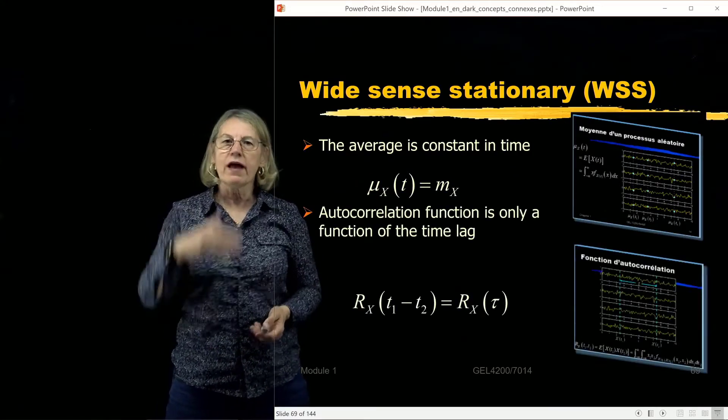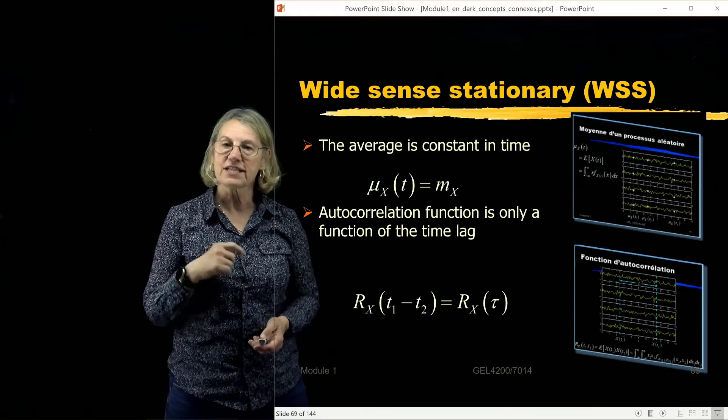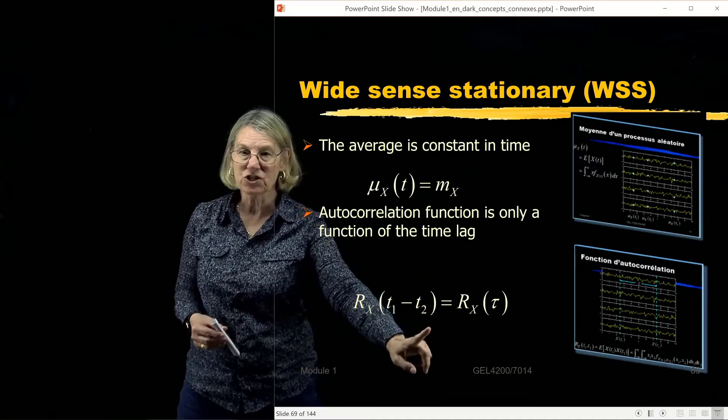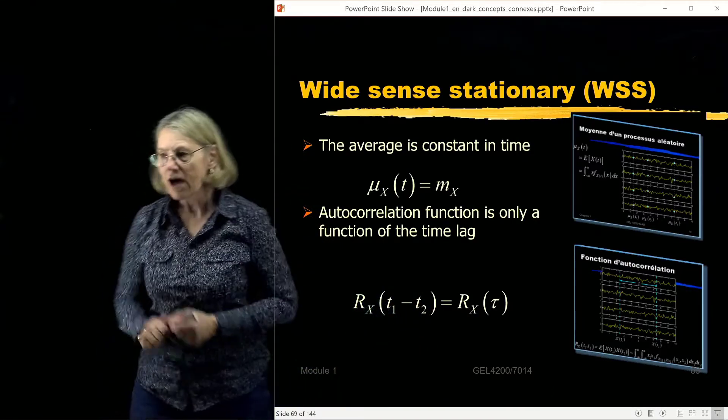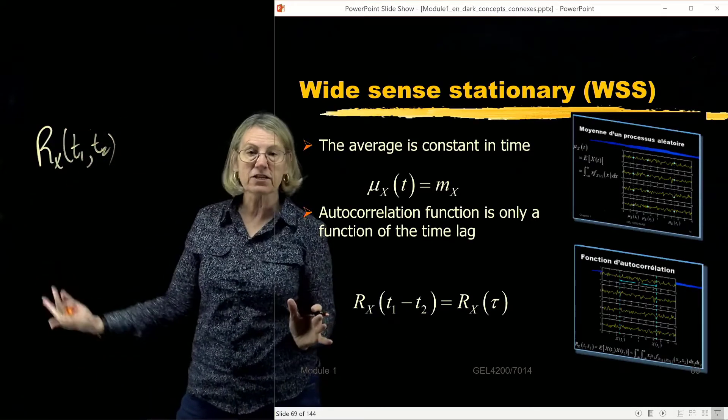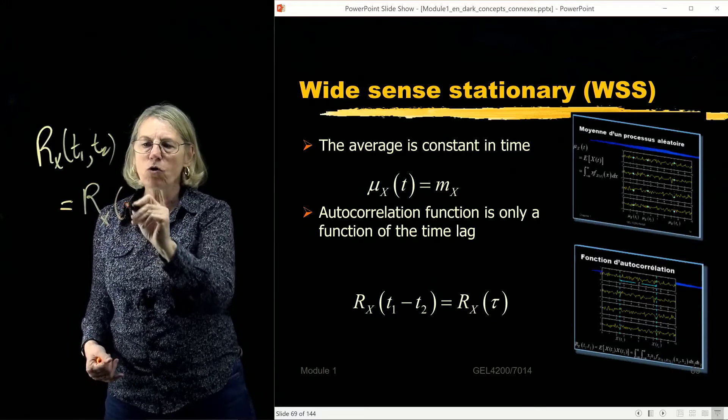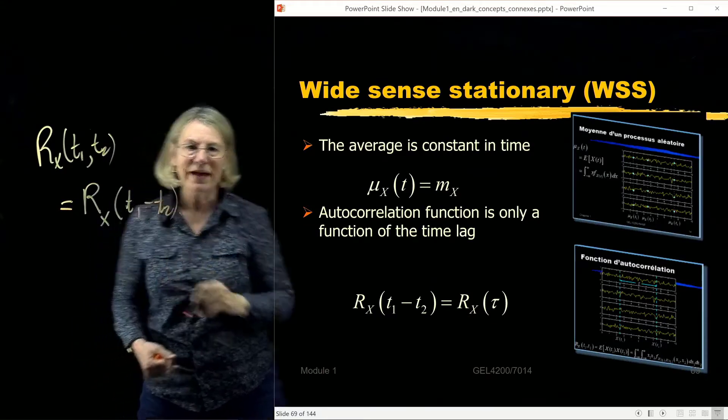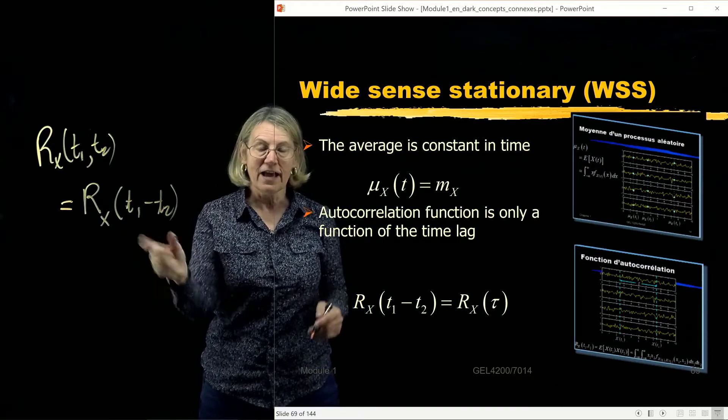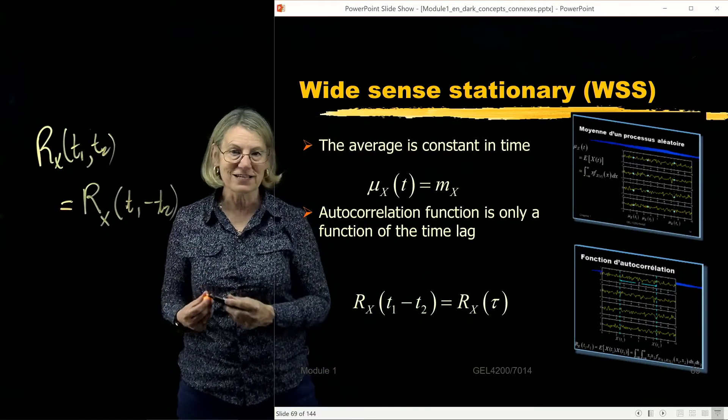The second requirement for a wide sense stationary process is that the autocorrelation function is a function only of the time lag. So I said that in general Rx is a function of T1 and T2. But if all this dependency of Rx(T1, T2) - if I have some mathematical expression for this function, if every time T1 and T2 appear, they only appear as this difference T1 minus T2, well then I say it's a function only of the lag. And since it's a function only of the lag, I can just rename that difference T1 minus T2 - I'm gonna call it tau.